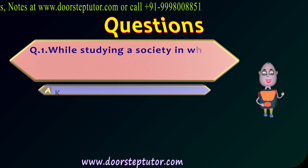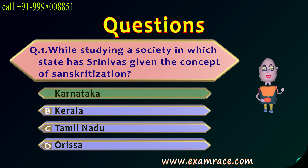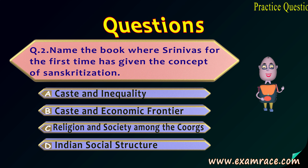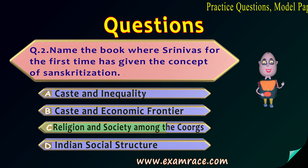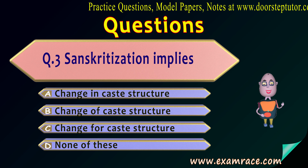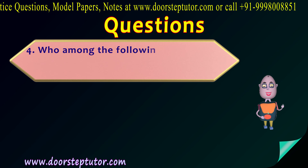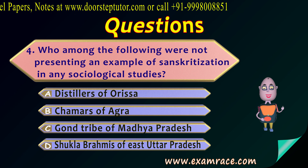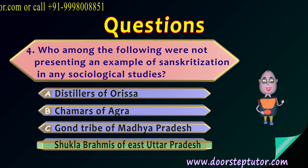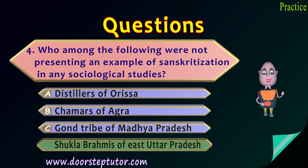Now some questions: In which state did Srinivas give the concept of Sanskritization? The answer is Karnataka — he studied Coorgs. Which book first introduced the concept of Sanskritization? Religion and Society Among the Coorgs. Does Sanskritization imply change in caste structure? Yes, that is correct. Who was not presented as an example of Sanskritization in any sociological study? The answer is the Shukla Brahmins of East Uttar Pradesh — they did not show any example of Sanskritization.